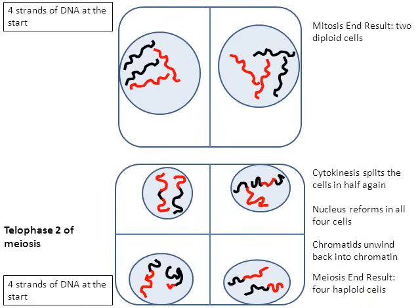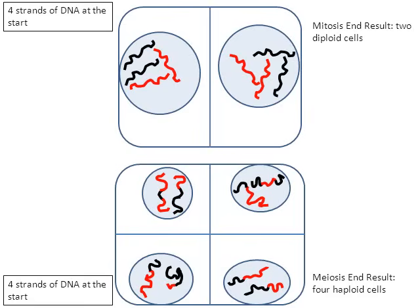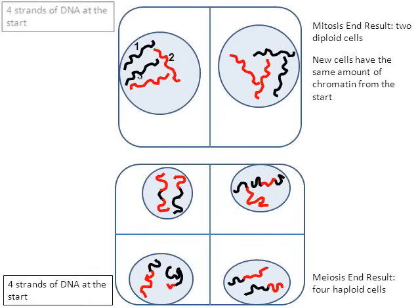Looking at the end result, what we finished with is four haploid cells. To wrap up: the box in the upper left-hand corner shows we started with four strands of DNA in the one cell at the top. Counting up the strands of DNA now — the two new cells on top each have four strands of DNA. So the cell started with four strands of DNA, and the two cells created each have four strands of DNA as well. Both cells are identical — they each have two fully black strands of chromatin and two fully red strands of chromatin.